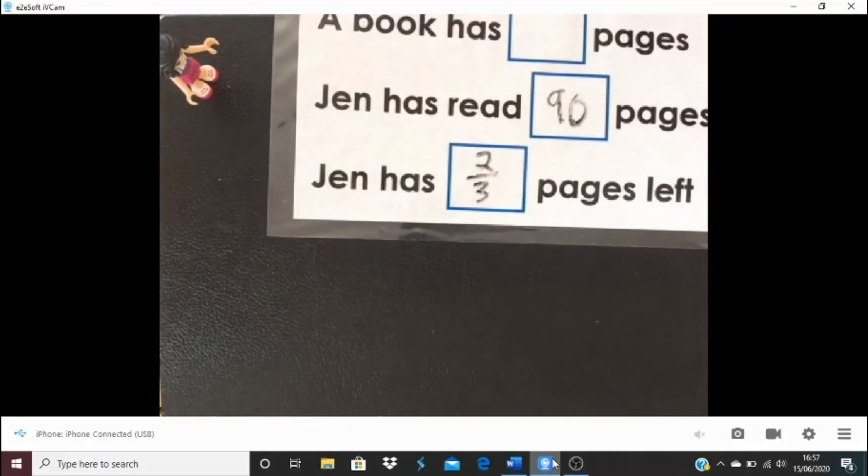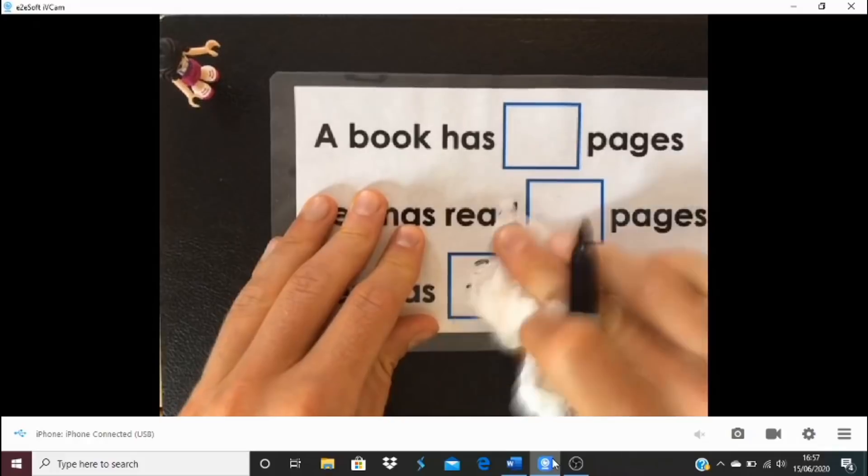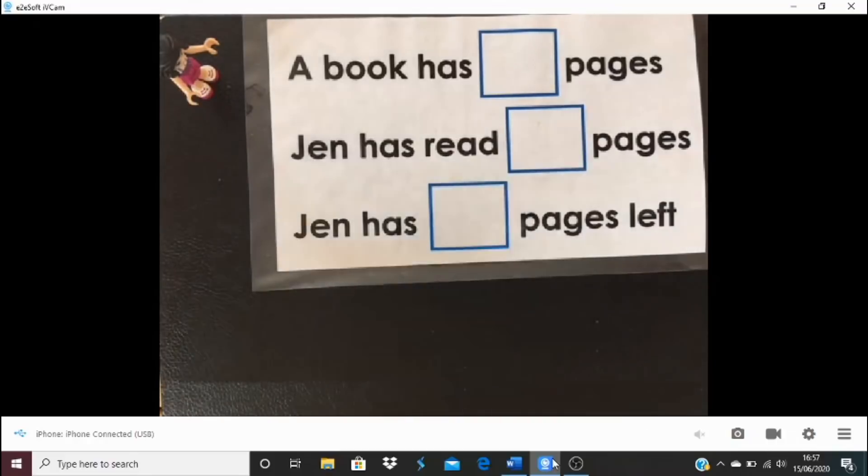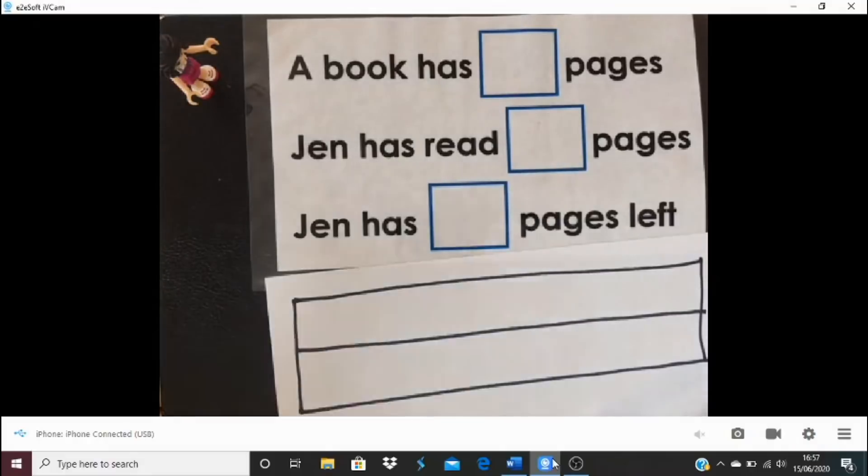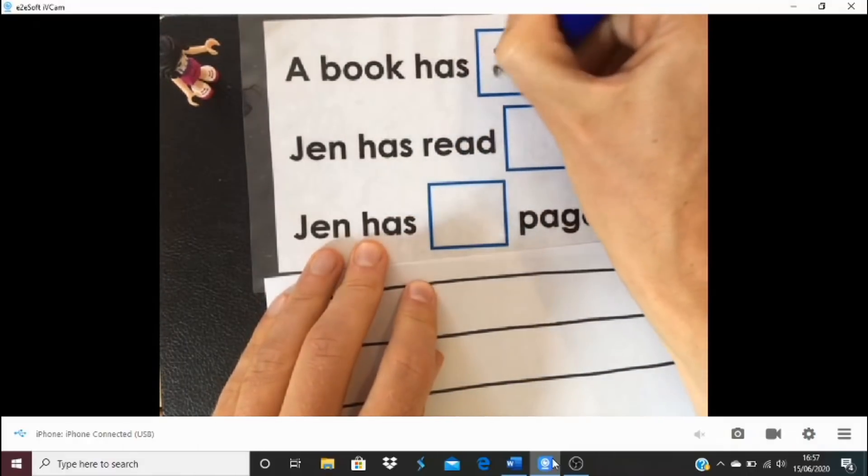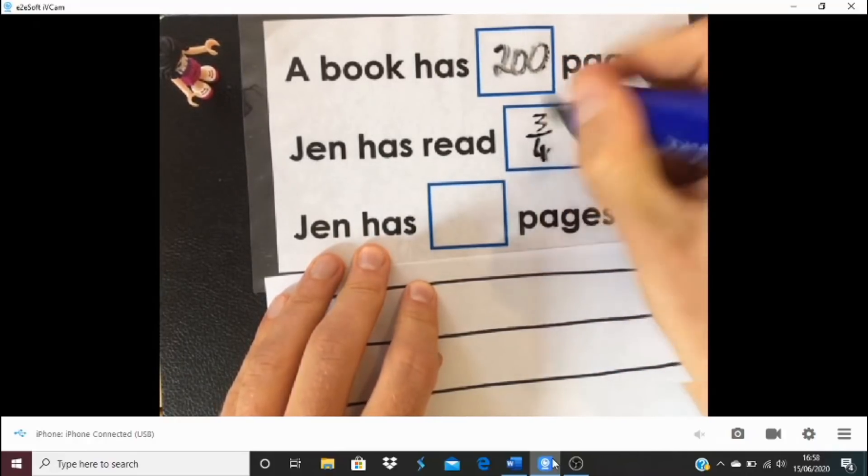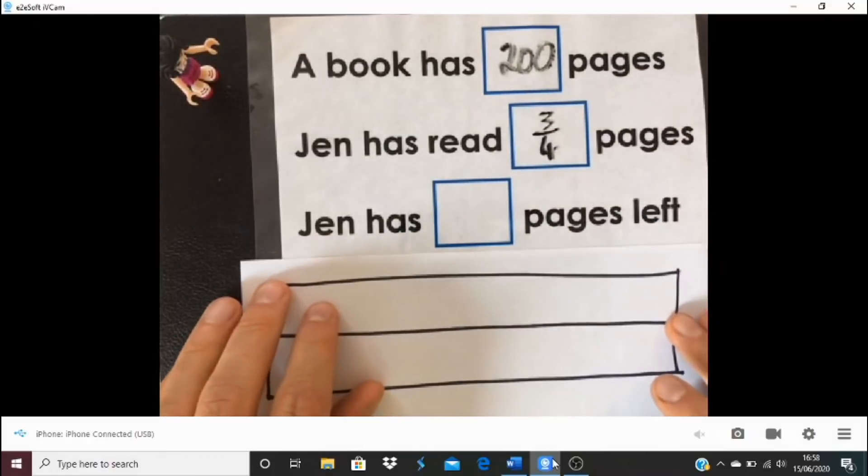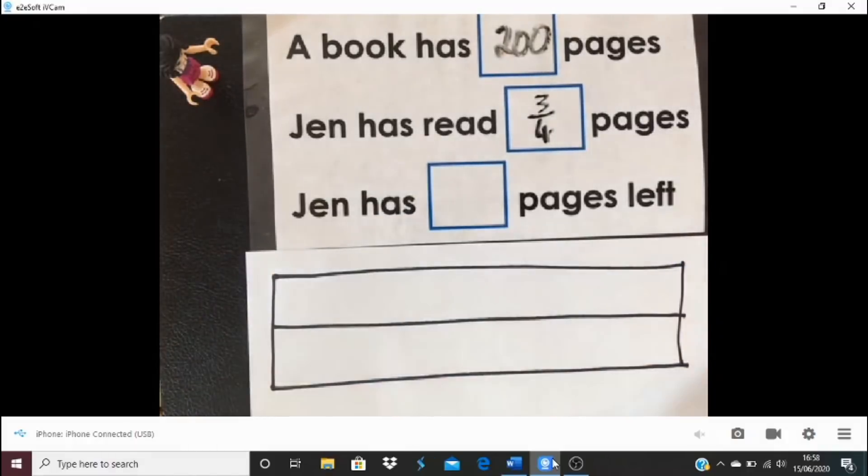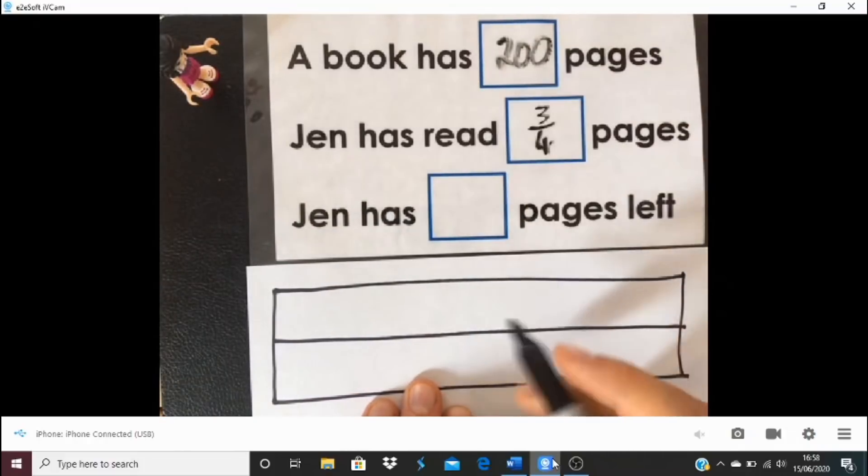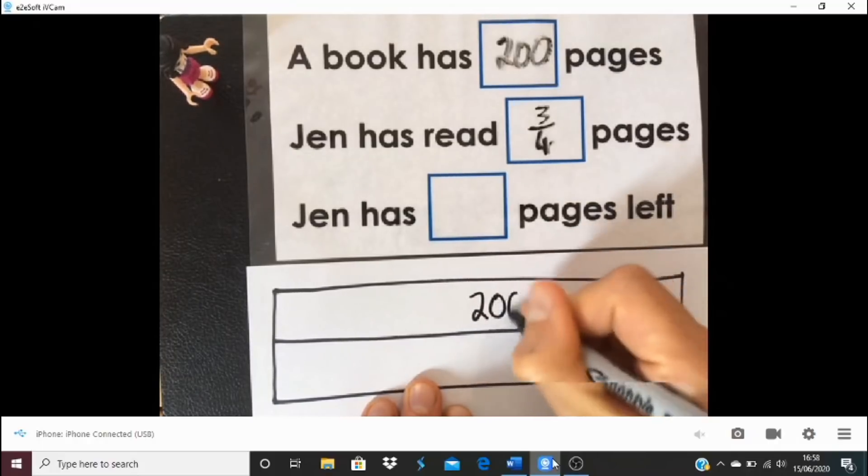Time for another one. This time it's one for you to have a go at, but can you see we're using the same prompt and hopefully you're starting to pick up on these patterns, use those drawings. This time let's go for a book that has got 200 pages, and Jen has read three quarters of the pages in the book. We want to work out how many pages has she got left. Pause the video, have a little go at this one.